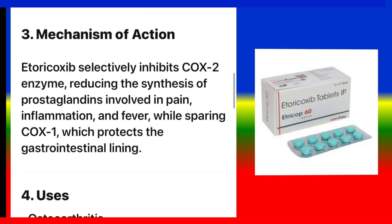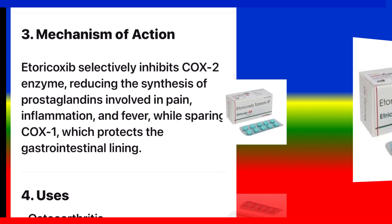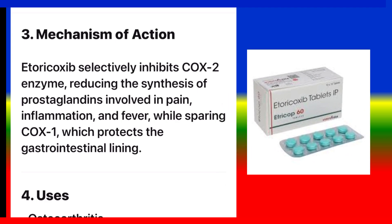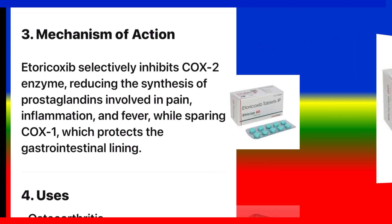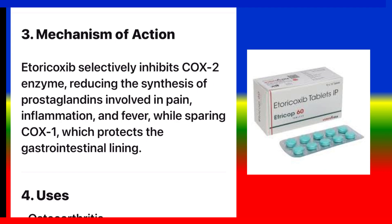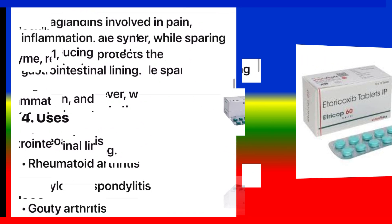Mechanism of action: Etoricoxib selectively inhibits the COX-2 enzyme, reducing the synthesis of prostaglandins involved in pain, inflammation, and fever, while sparing COX-1, which protects the gastrointestinal lining.